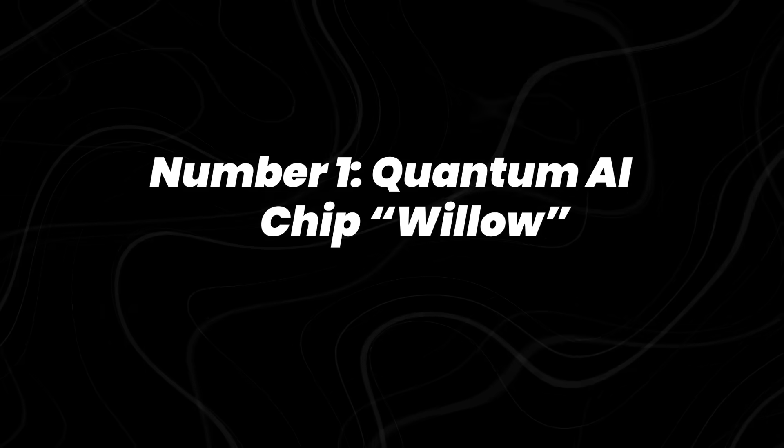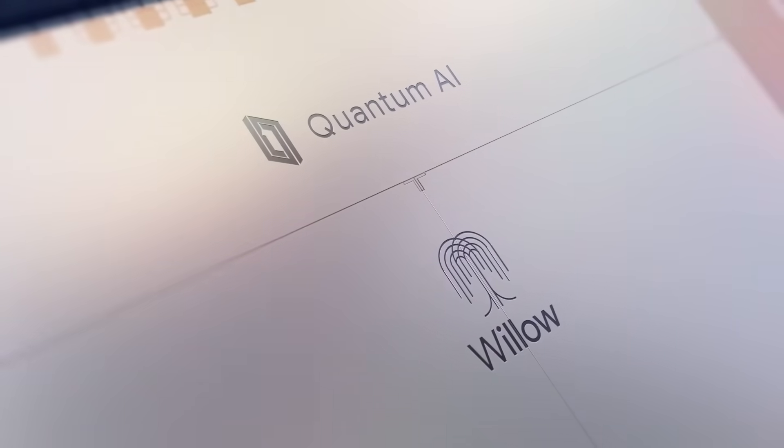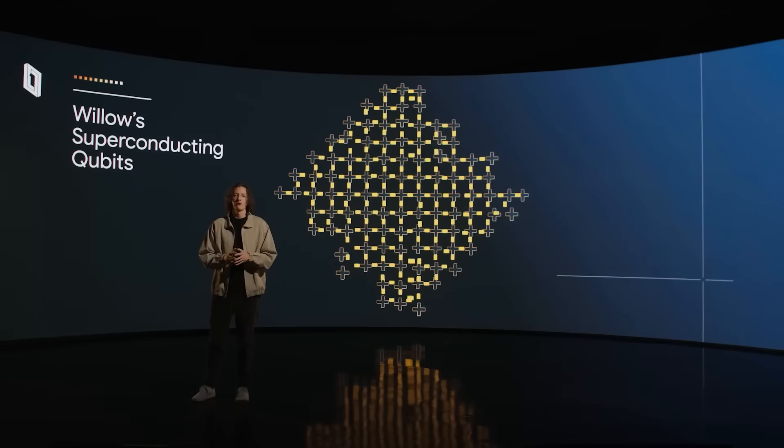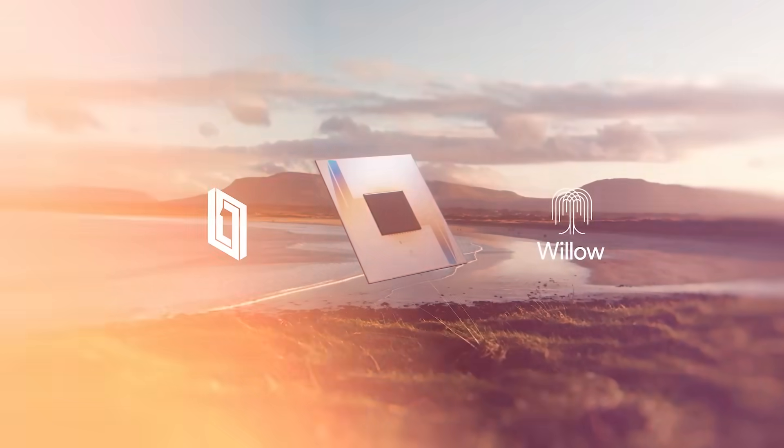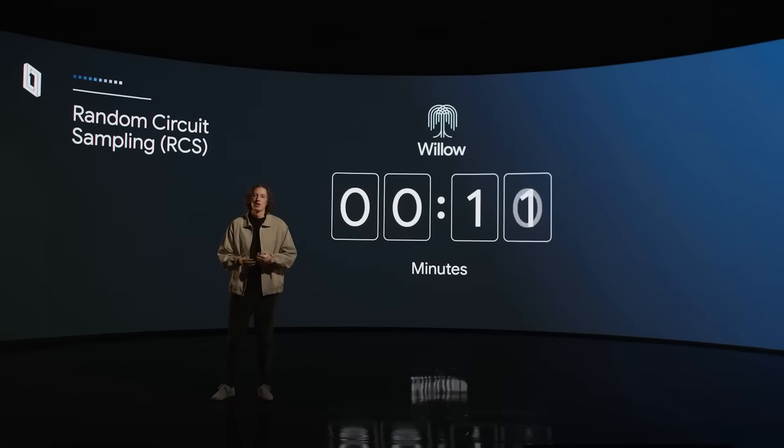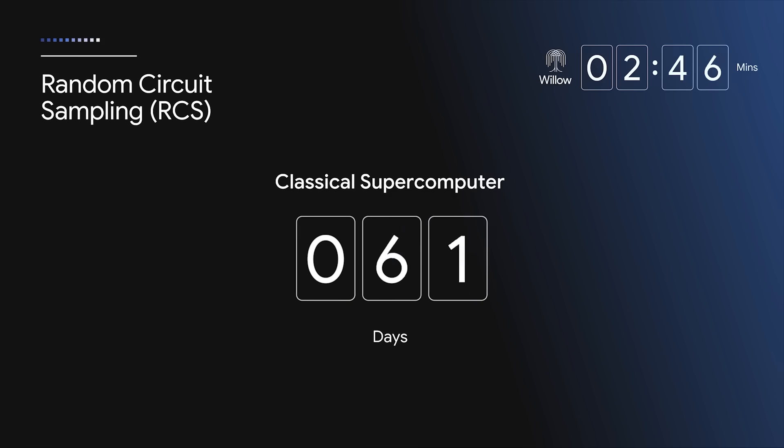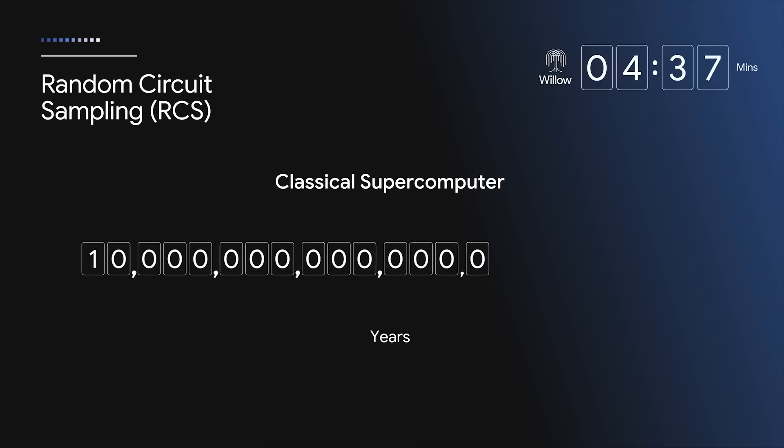Number 1. Quantum AI Chip. Willow. In 2024, Google unveiled Willow, a 105-qubit quantum chip designed specifically for AI workloads. During testing, Willow solved a computation in just five minutes that would take classical supercomputers billions of years.